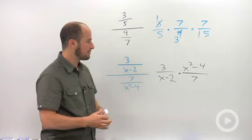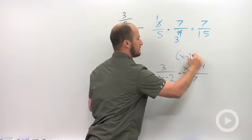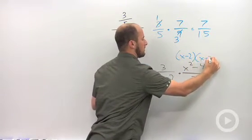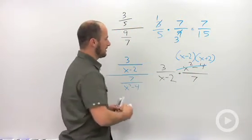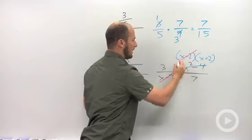We can factor the numerator over here. This numerator turns into (x minus 2)(x plus 2). And then we can cancel the x minus 2.